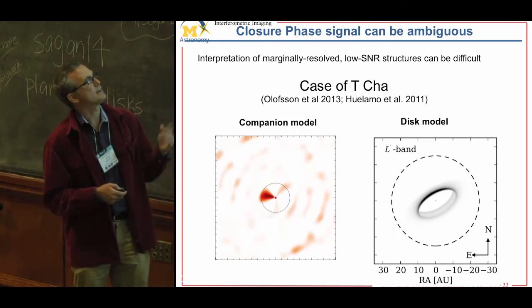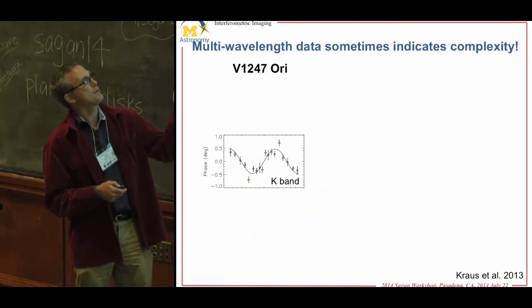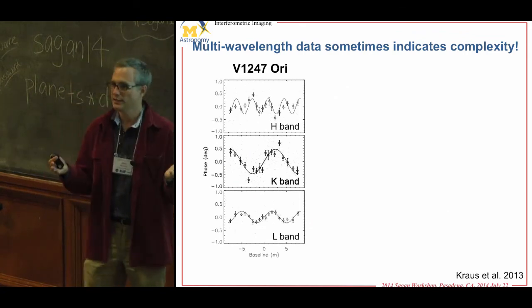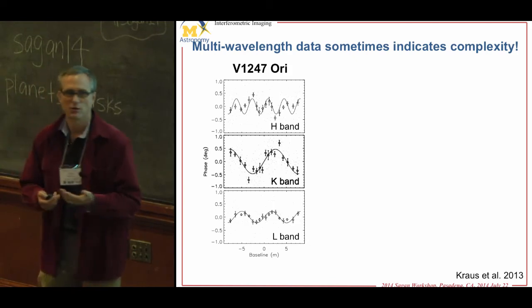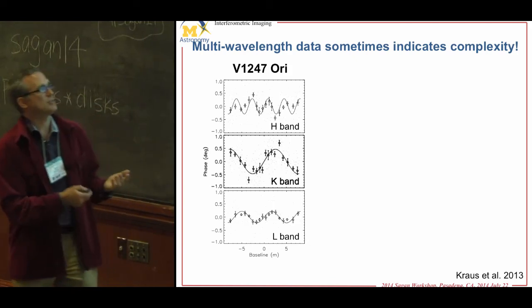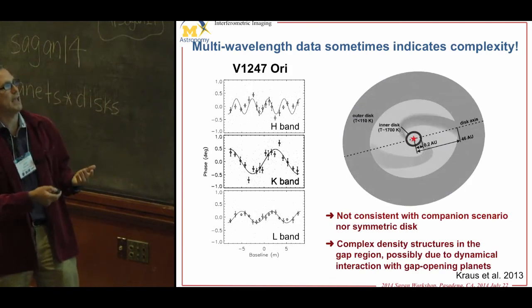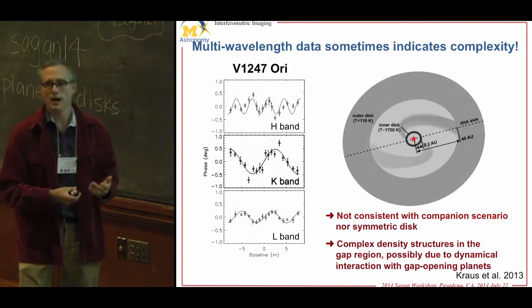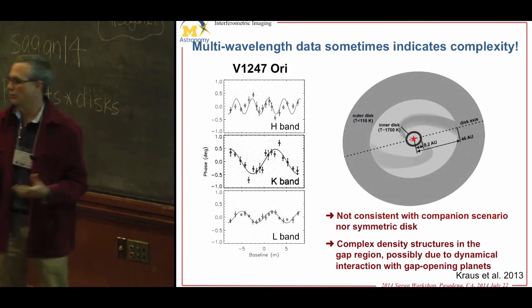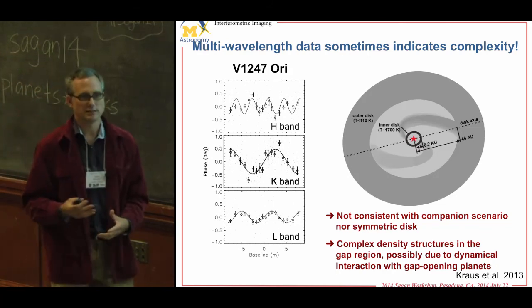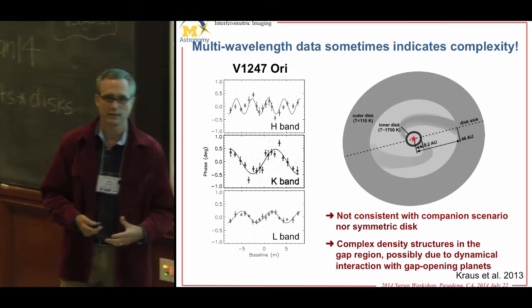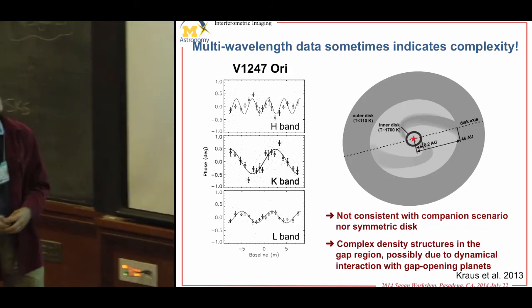Here's a case that looked like an exoplanet, but when examined at two different other wavelengths it had a totally different position — clearly not a point source. This led to even more complicated possibilities like feeding streams and other disk complexities. We clearly need more information on this.